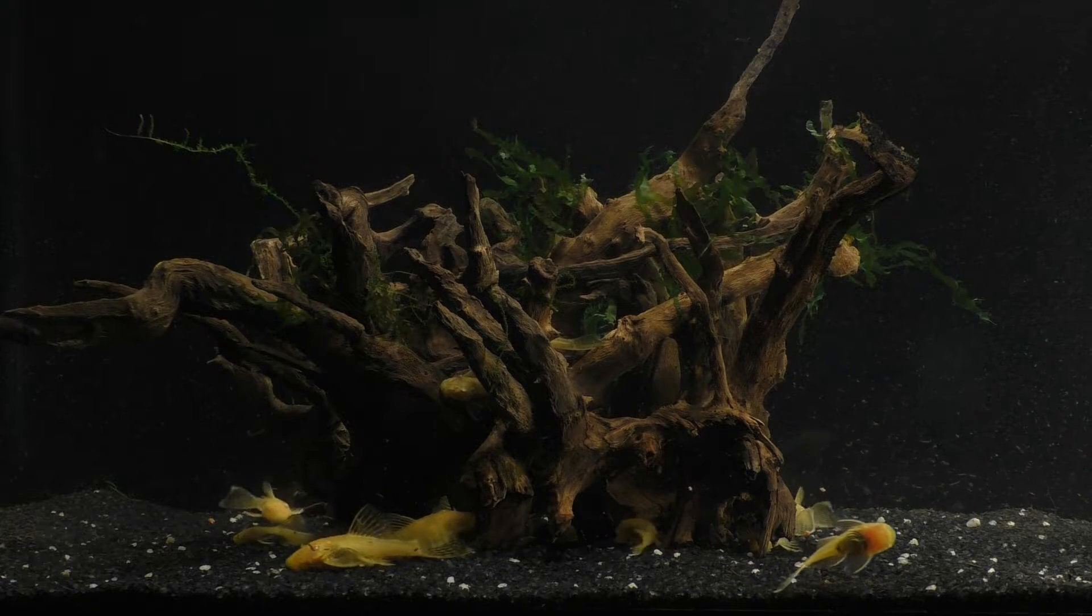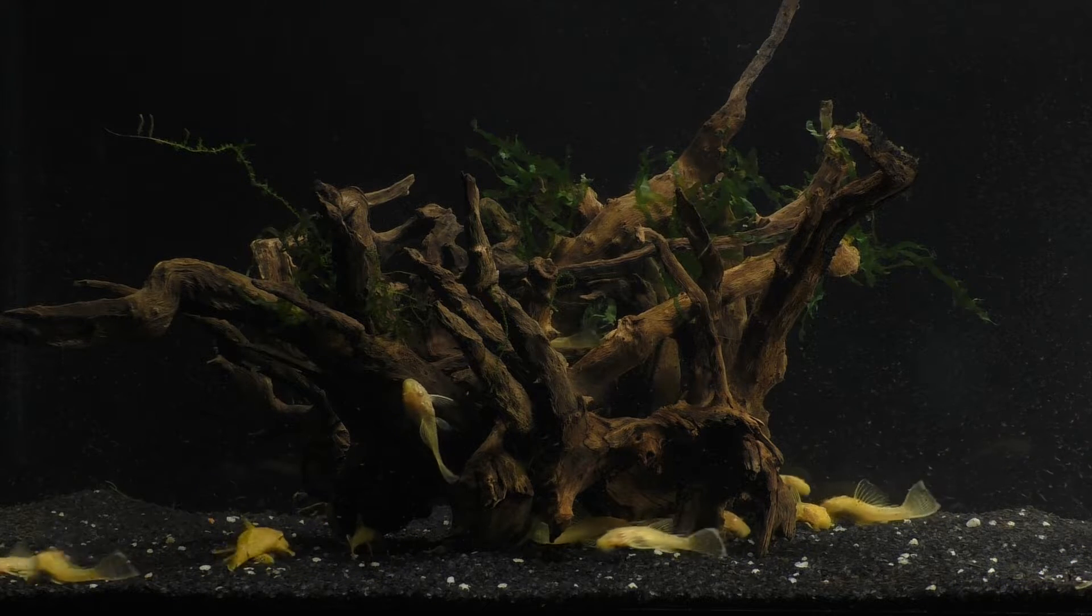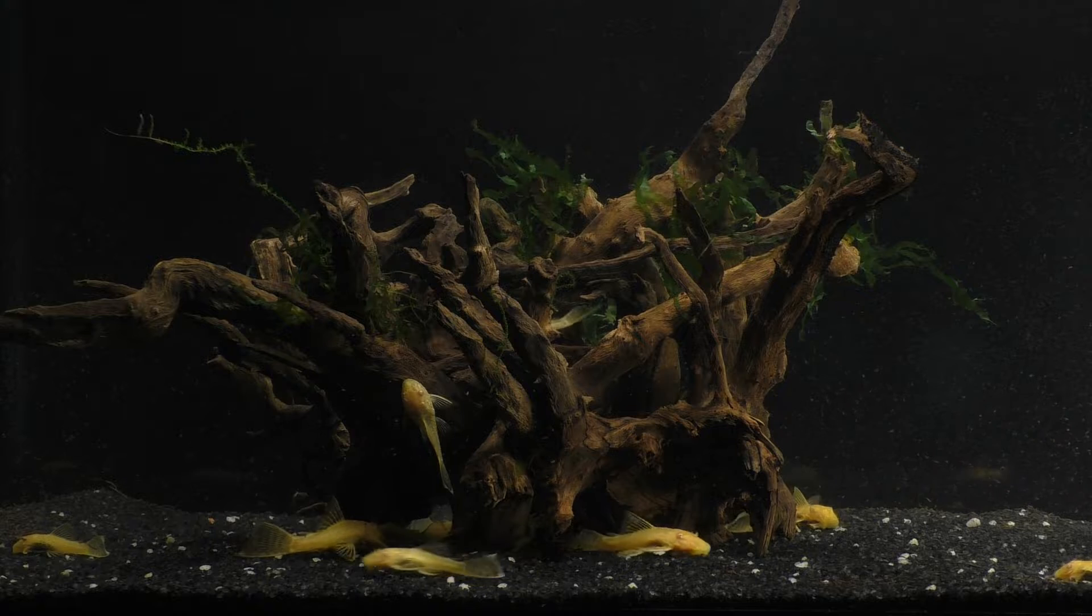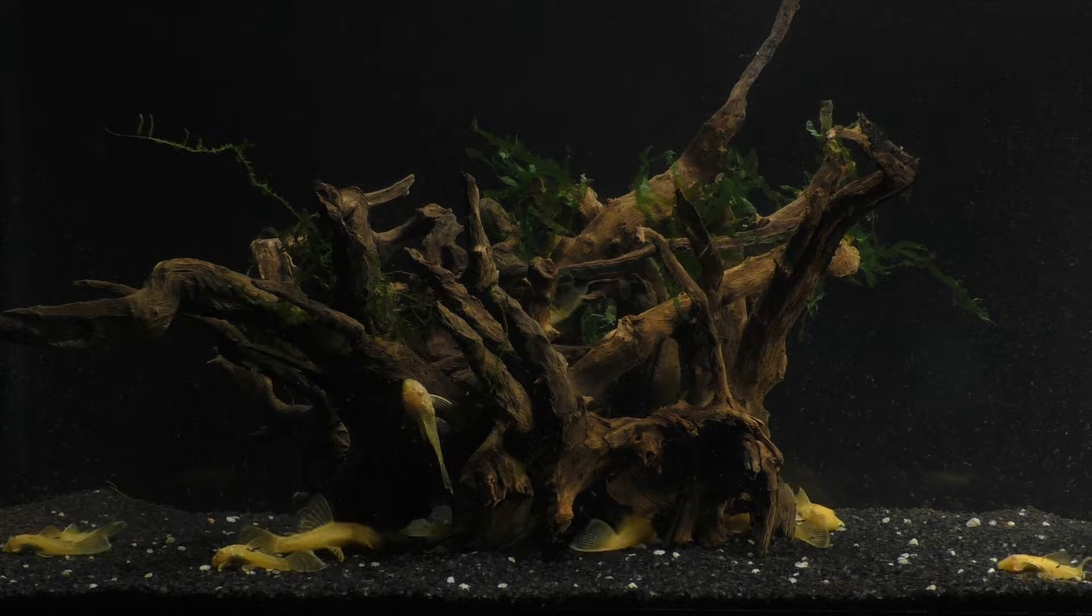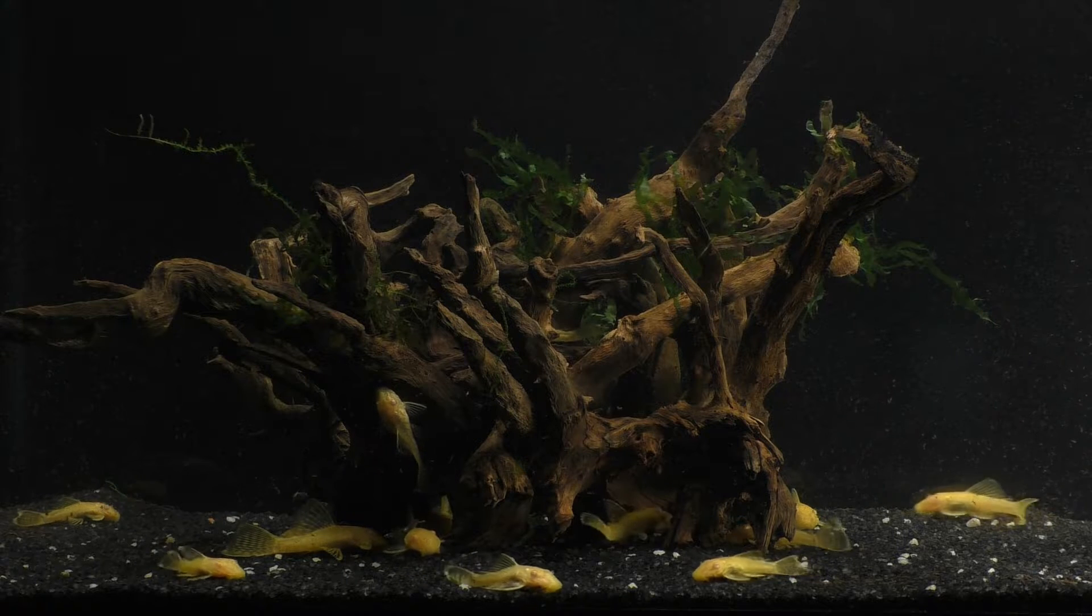This is a 10-gallon tank that contains around a dozen juvenile bristlenose plecos. One day, while doing a water change, I noticed that the plecos were attracted to the current created by the new water being put into the tank. So this got me thinking.